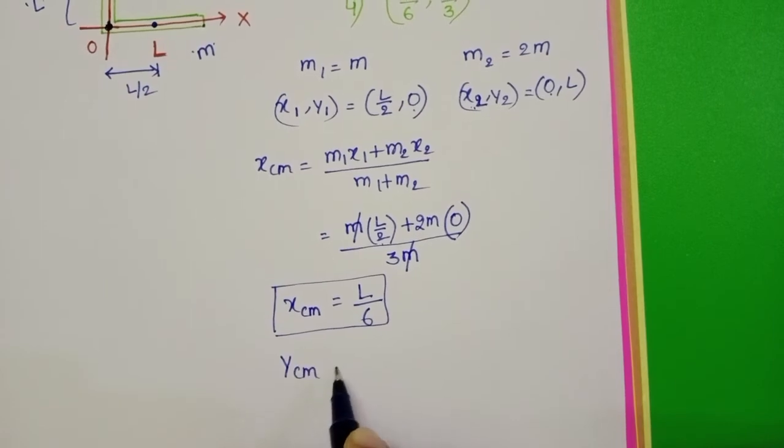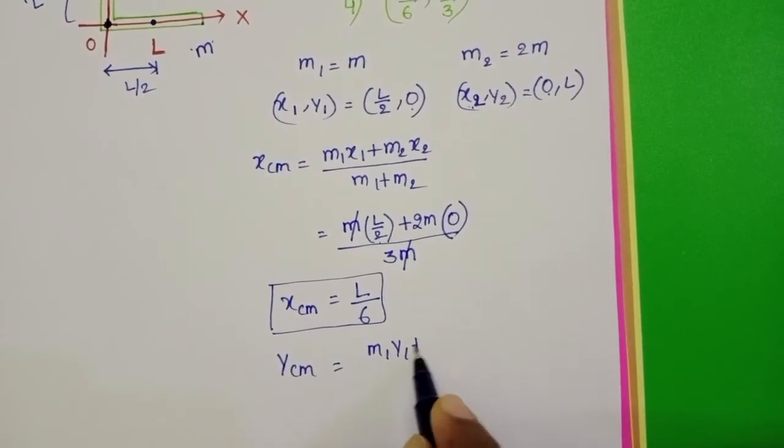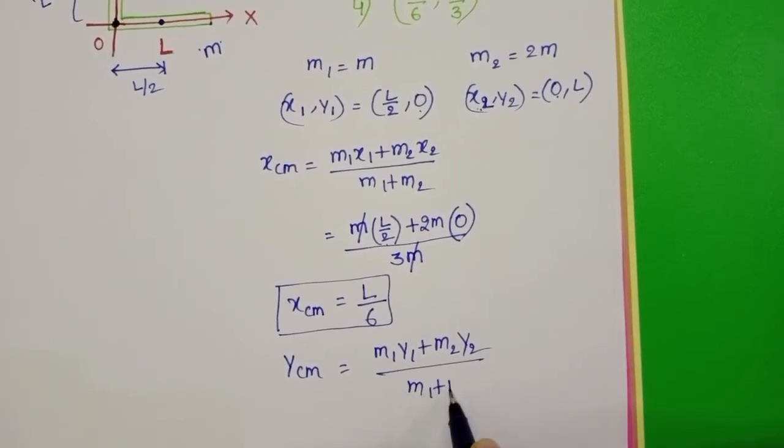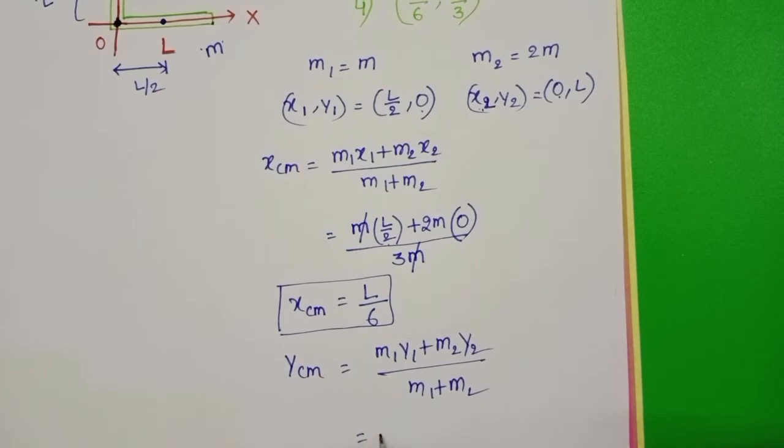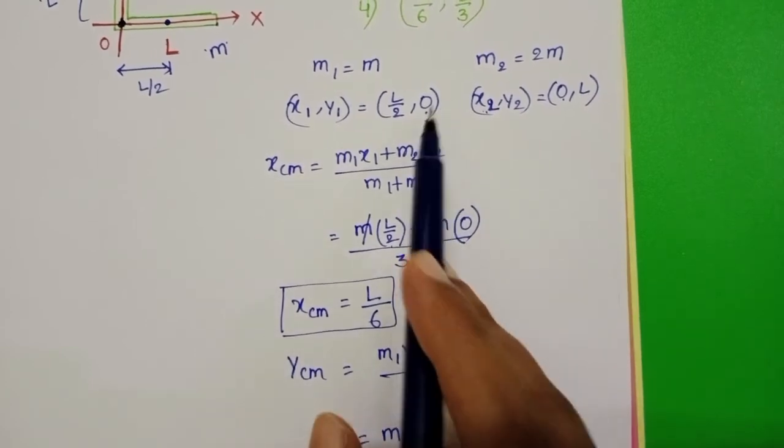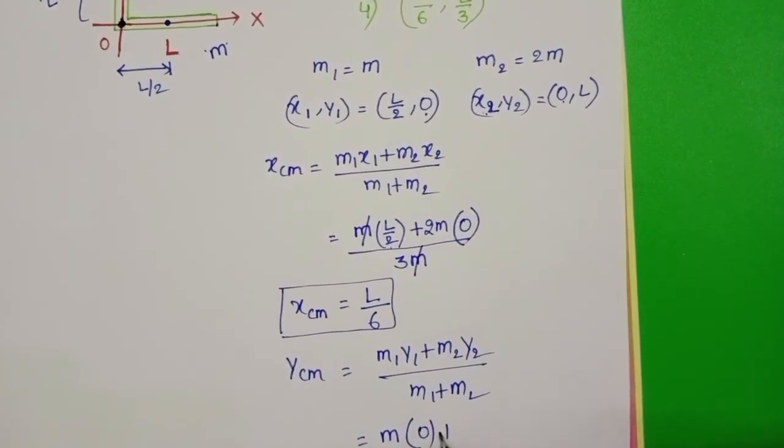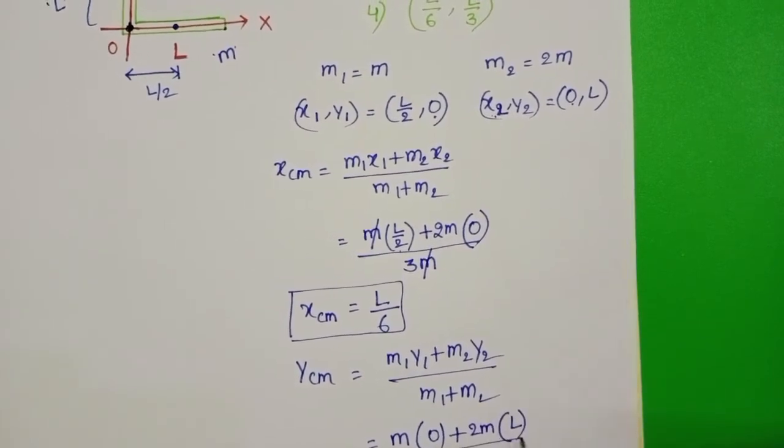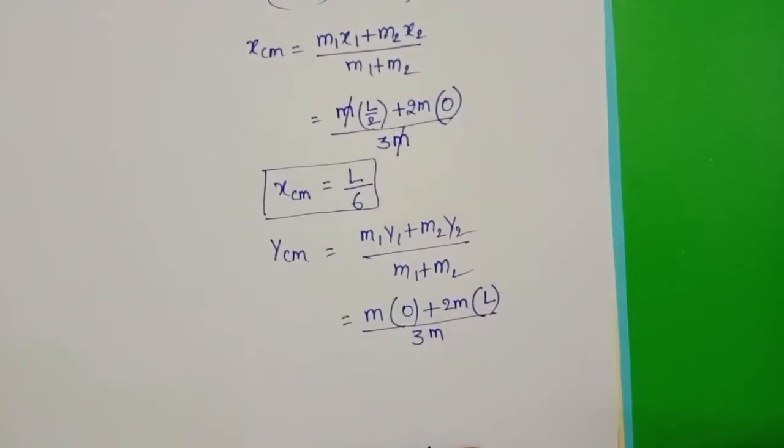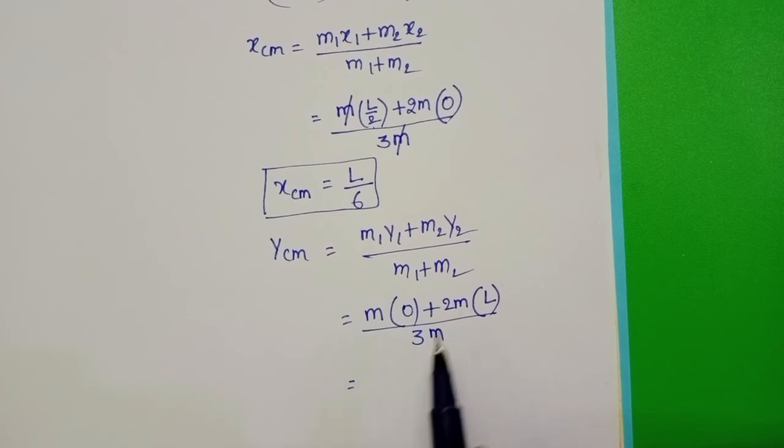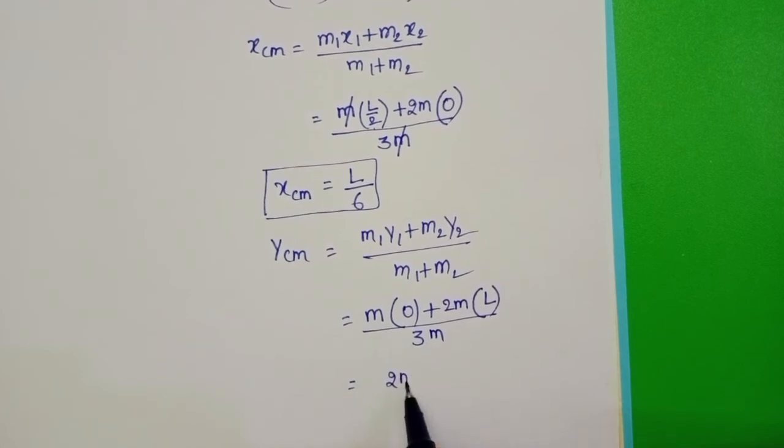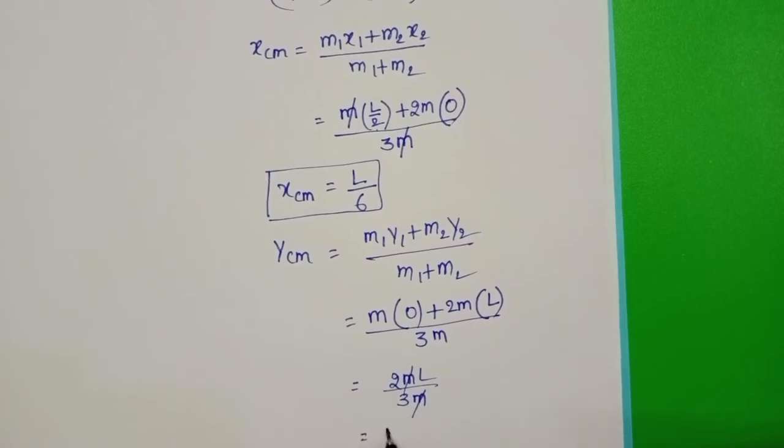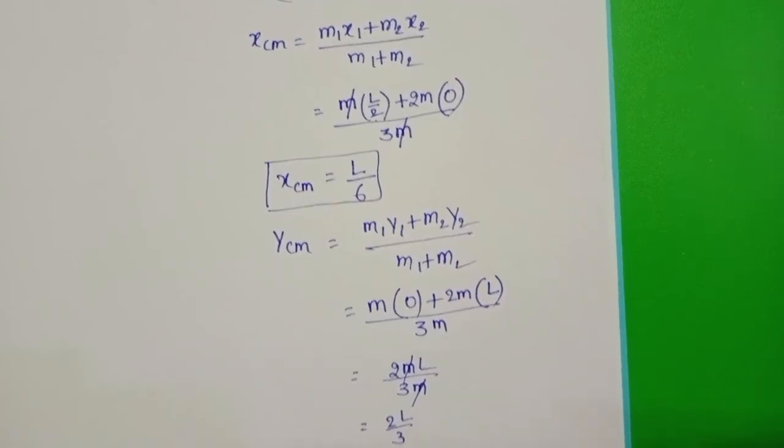Now Y_CM equals M1 Y1 plus M2 Y2 by M1 plus M2. Mass of the first rod is M and Y1 equals 0 plus mass of the second rod is 2M and Y2 equals L by total mass 3M. First term is 0, so 2ML by 3M. M gets cancelled. That equals 2L by 3.